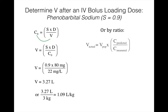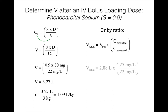We can also solve this by ratio: V actual = V population × (C predicted / C measured) = 2.88 L × (25/22) = 3.27 liters. If you're unsure about the ratio direction, reason through it: we gave a dose, predicted 25 mg/L, but measured only 22 mg/L, so the volume must be larger. Putting 22 over 25 would yield a smaller volume, which is incorrect. Dividing 3.27 liters by 3 kg confirms 1.09 L/kg.